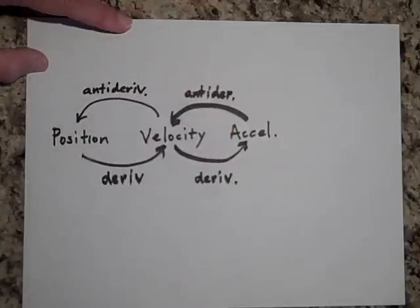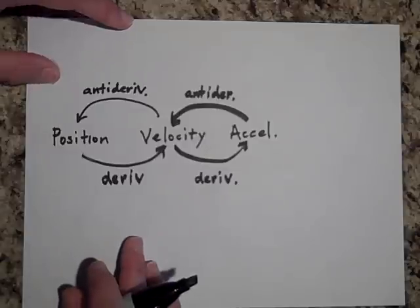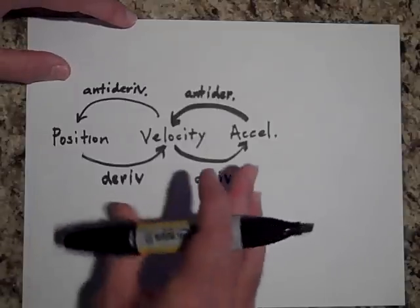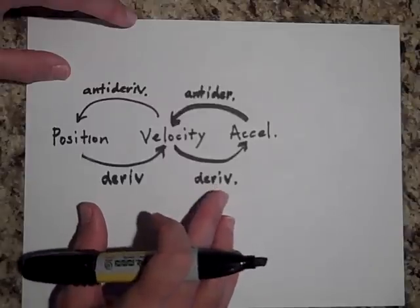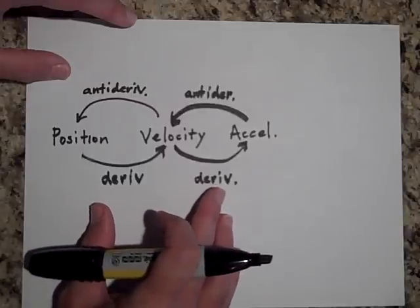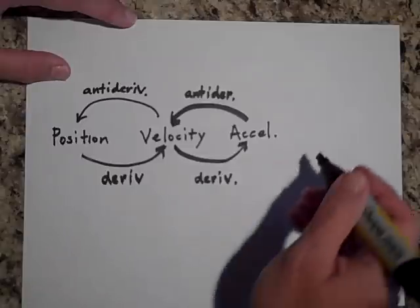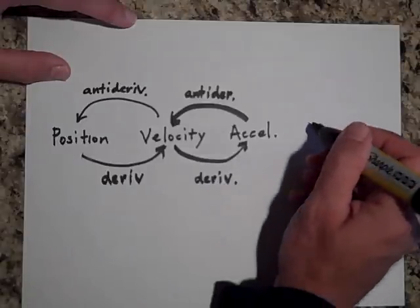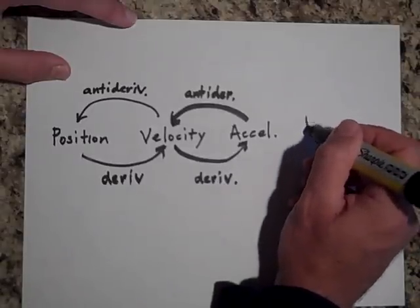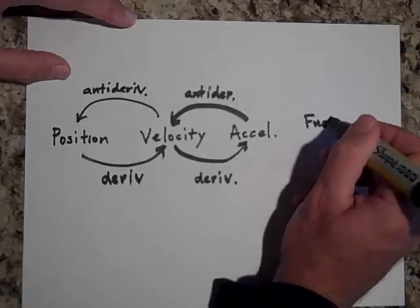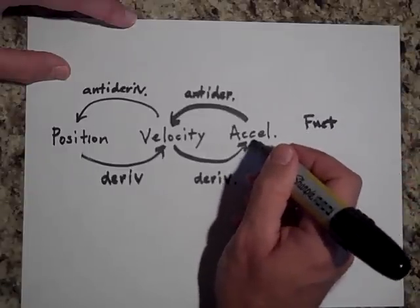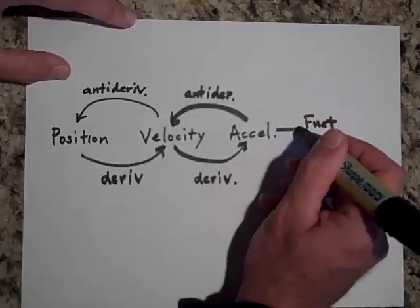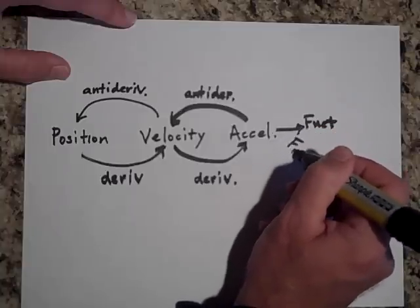What we're going to do is make a big concept map or flow chart here. And so right now, this is what we're taking out of Unit A, just the study of motion, of describing motion. The first thing we're going to take out is that if we want to get the F net, the net force on an object, if we have the acceleration, we can get that just by saying F net equals ma.